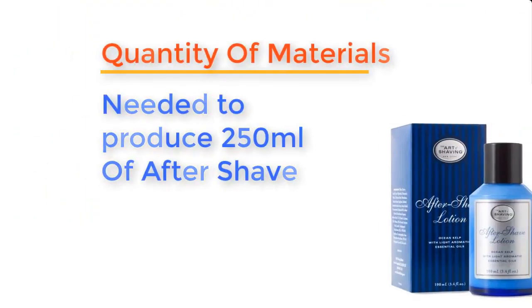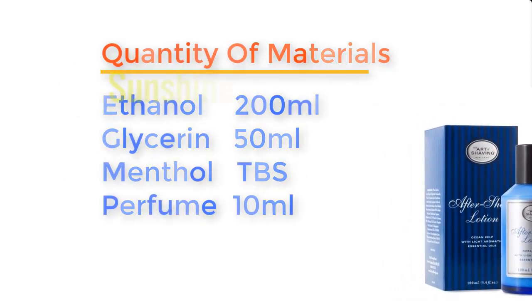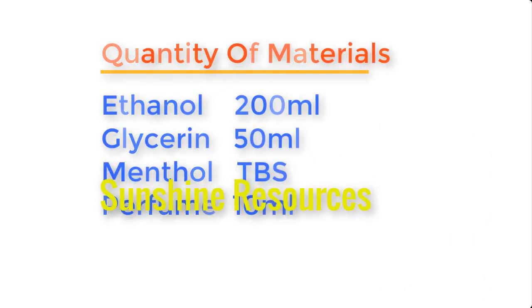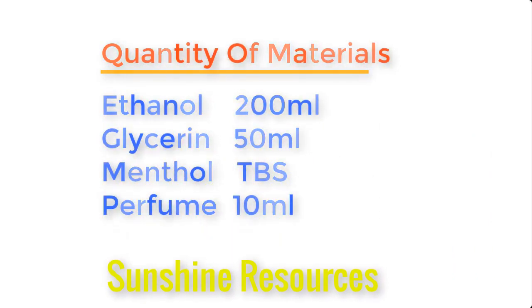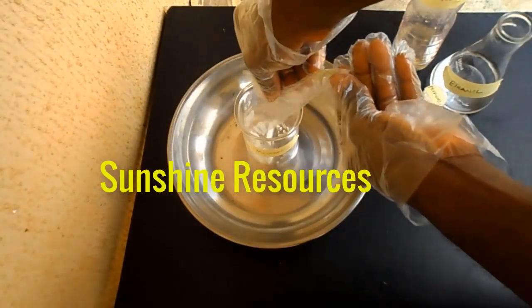To produce about 250 ml of aftershave, the quantity of materials needed are 200 ml of ethanol, 50 ml of glycerin, a tablespoon of menthol, and 10 ml of perfume. Now measure a small quantity of ethanol and dissolve the menthol in it.